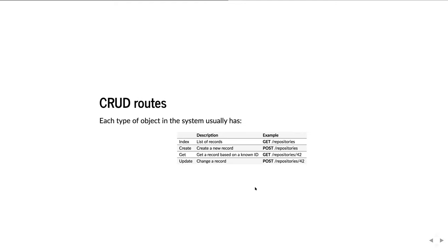Each type of object in the system usually has the following CRUD routes. The index route gets you a list of records and is usually /name_of_the_thing — so /repositories gets you a list of all repositories. Create is usually POST /name_of_the_thing and creates a new record based on JSON you pass as the body of the POST request. GET with an ID gets you the record with a known ID. Update lets you change the record by POSTing the changed JSON to the object's URI. And DELETE sends a delete request to the same URI.